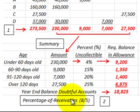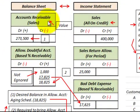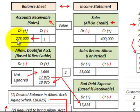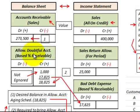This is based on the percentage of receivables. Let's look at how we record this on the balance sheet and income statement using the allowance method. On our balance sheet we have accounts receivable with a debit amount of $273,500 from our aging schedule. Then we have an allowance for doubtful accounts — the amount we estimate won't be collected — which comes off the aging schedule. That's a contra-account to accounts receivable that reduces accounts receivable.